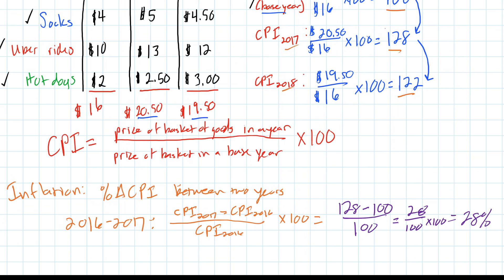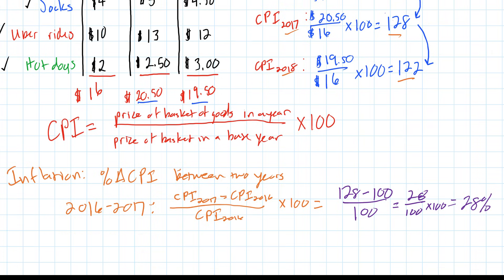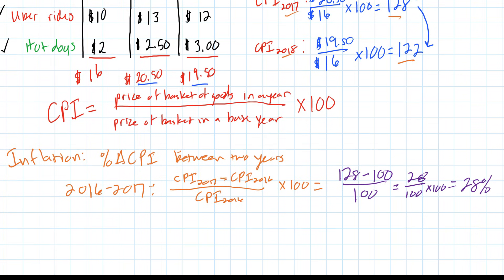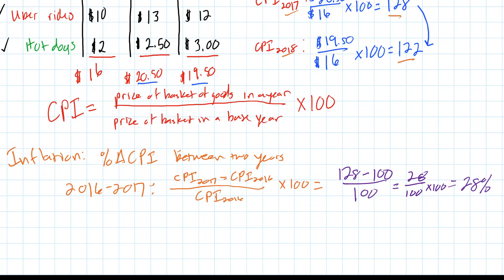Now that's obviously a pretty easy one. When comparing the CPI to the base year, it's pretty apparent what the rate of inflation is. It's how much the CPI increased expressed as a percentage. Let's do the same thing for 2017 to 2018.